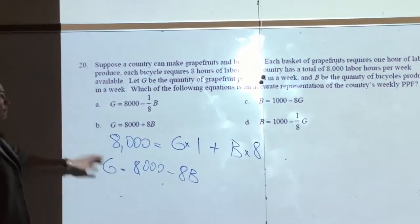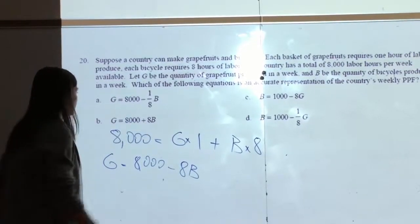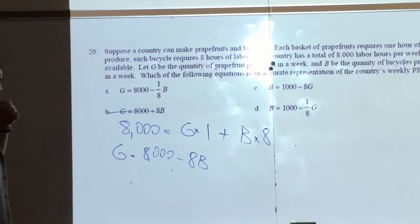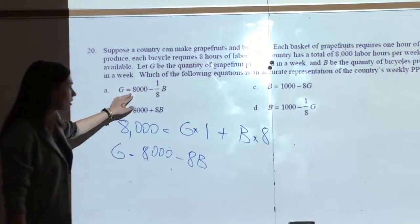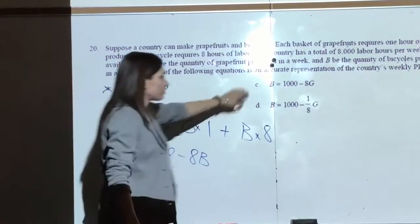Well, first of all, let's comment on the fact that this would not happen. We know that the slope is negative, so that would not be it. Alright, so we have G equals 8,000 minus 8B. That's not right. So, it's one of those two.